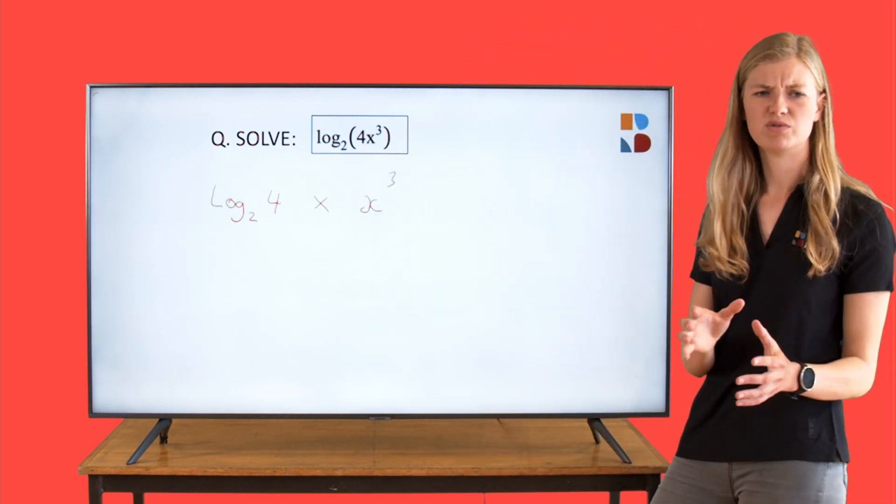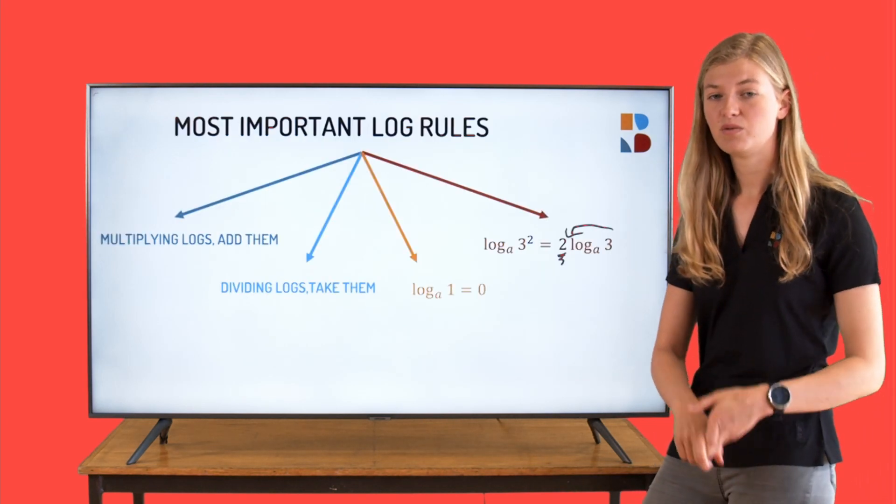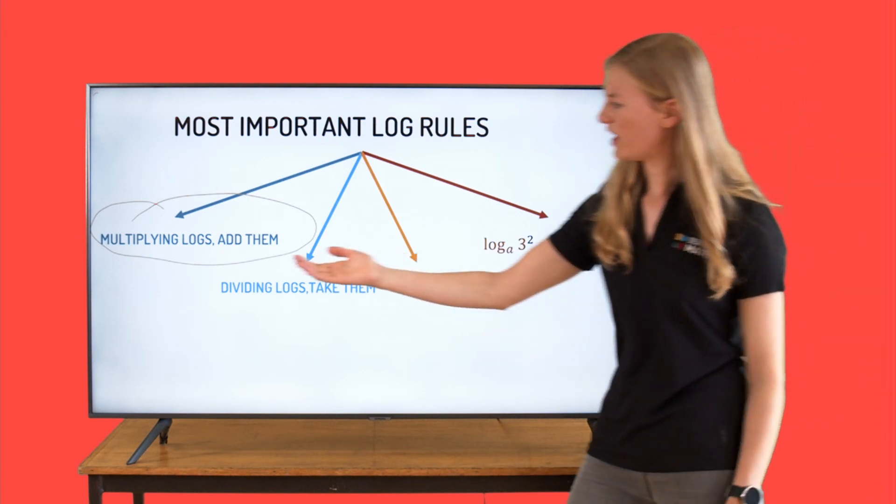Now, what was that first rule we had again? When multiplying logs, we can add them. So let's have a look at what that looks like.